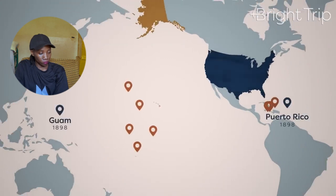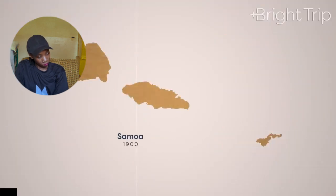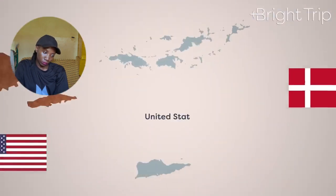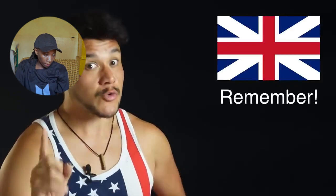Meanwhile, Alaska was purchased from Russia. In 1898 Hawaii was annexed from the Kingdom of Hawaii. A year later, after the Spanish-American War, a bunch of new islands joined, but only Puerto Rico and Guam would stay as territories. Later, only what is now American Samoa voted to remain, and finally in 1917 we bought the Virgin Islands from Denmark.